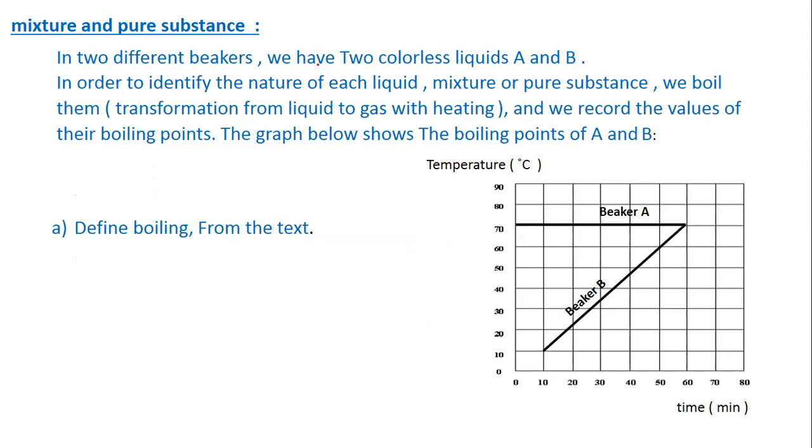Question two. Mixture and pure substance. In two different beakers, we have two colorless liquids A and B. In order to identify the nature of each liquid, mixture or pure substance, we boil them - transformation from liquid to gas with heating - and we record the values of their boiling points. The graph below shows the boiling points of A and B.